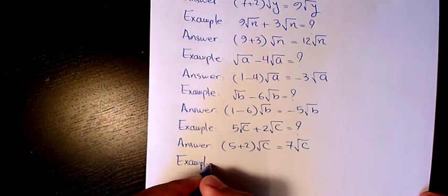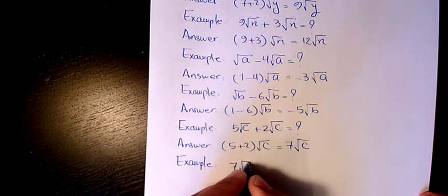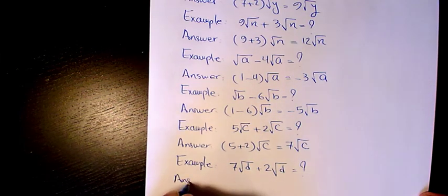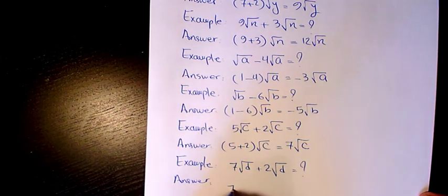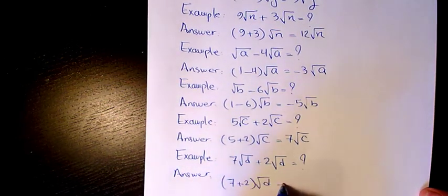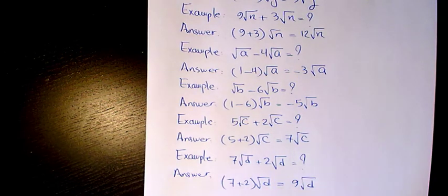And then last example we have 7 root d plus 2 root c, or that's going to be 9 root c. That's the final answer.